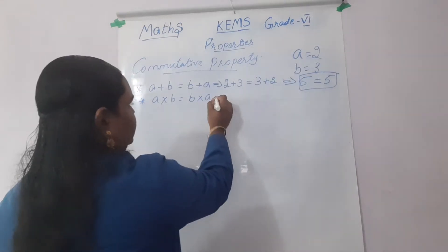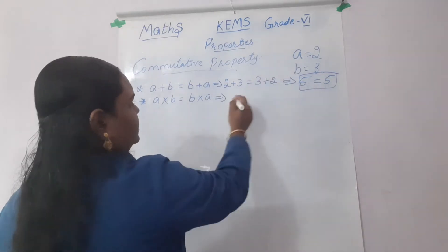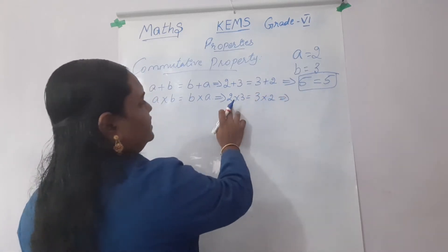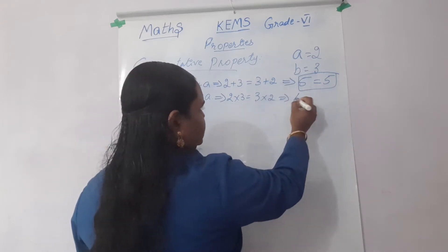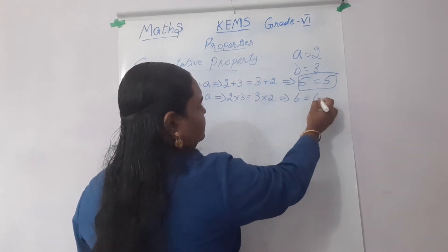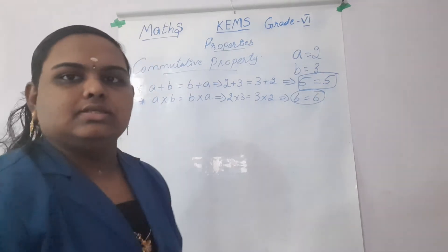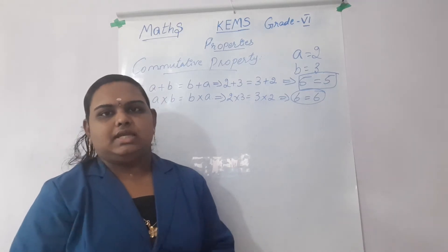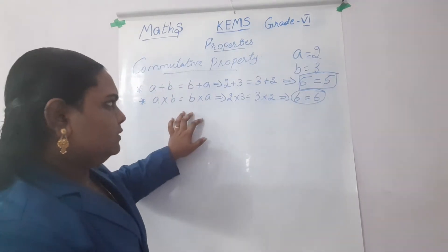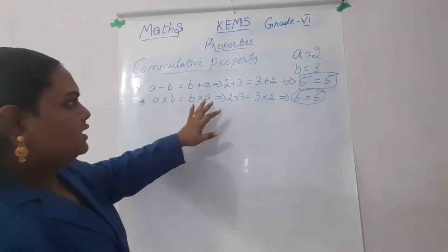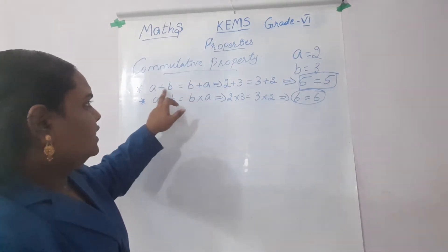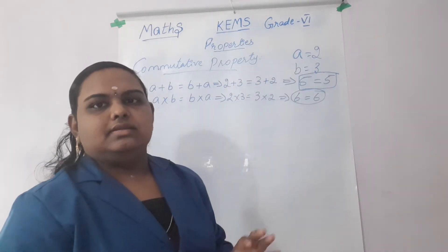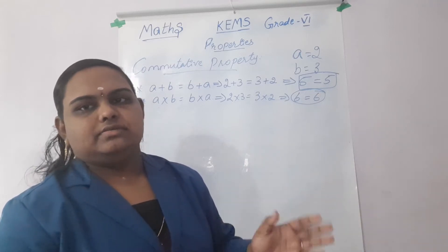Let's check it for multiplication. A into B — what is A into B? 2 into 3 equal to 3 into 2. That is 2 into 3 is equal to 6, and 3 into 2 is equal to 6. So the condition is the same. This is the commutative property. The symbols only will be changed. A plus B is 2 plus 3; B plus A is 3 plus 2. If we get the same answer, it will be closed under addition as well as multiplication.